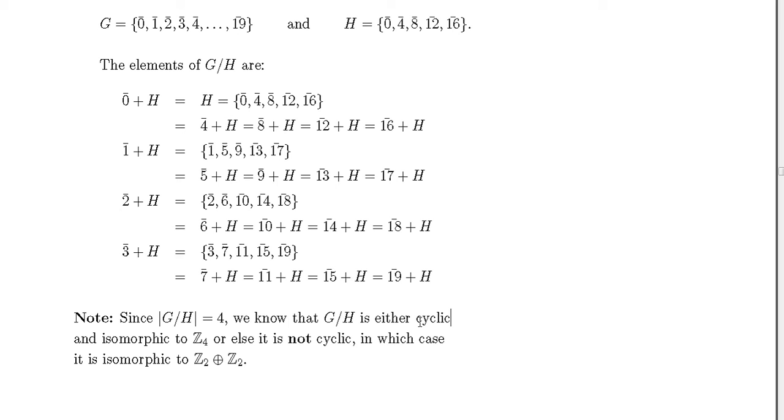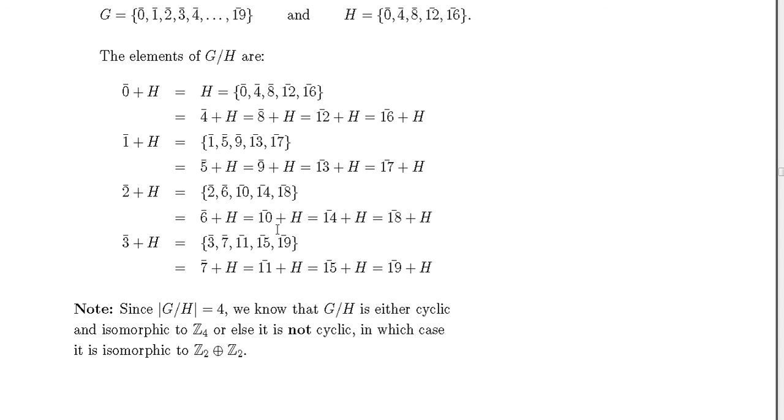Or if it is not cyclic, it will be isomorphic to the direct sum of Z2 by Z2. So the division G/H is a group, either isomorphic to Z4 or isomorphic to the direct sum Z2 plus Z2.